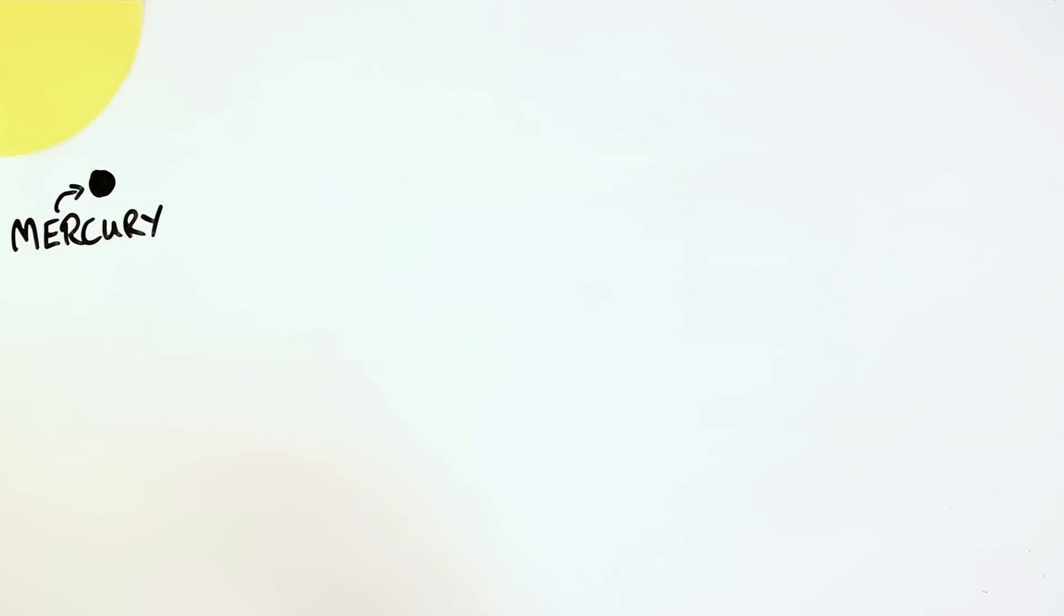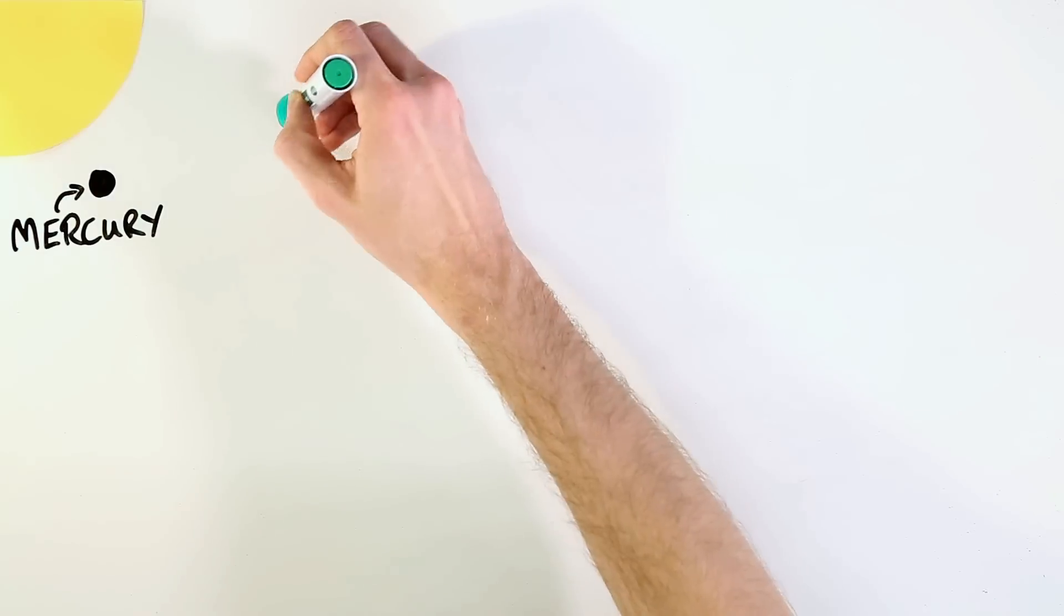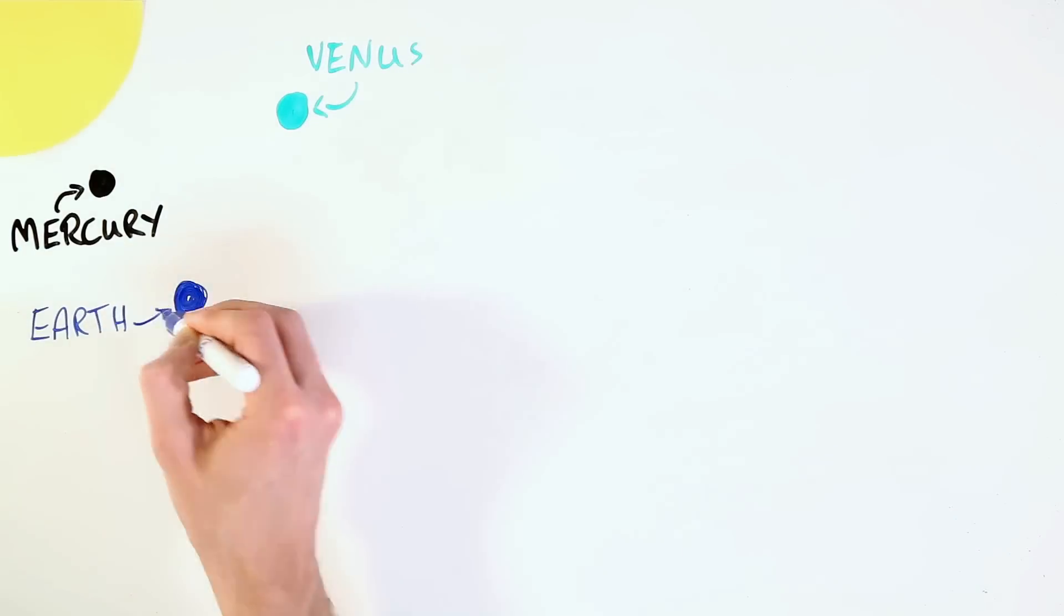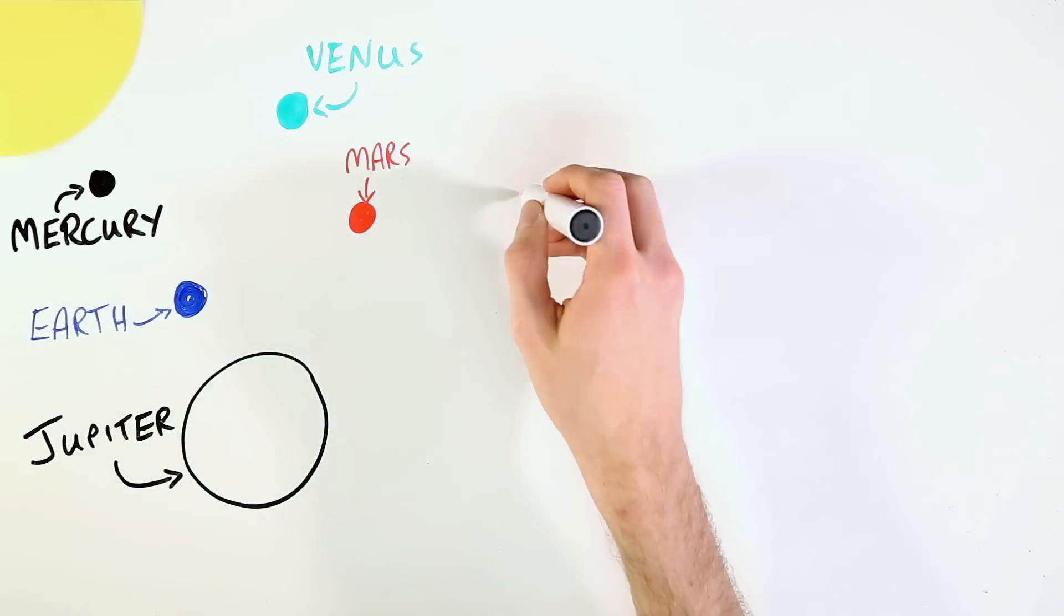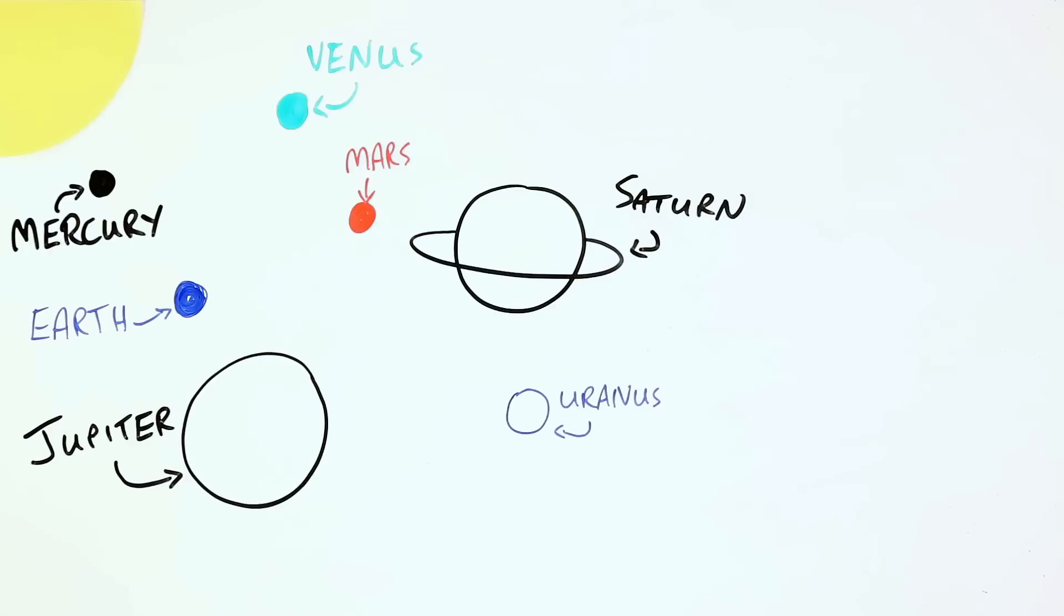This great mass gives the Sun a strong gravitational pull, which holds small rocky planets, including the Earth, in close orbit. Further out are the gas giants, many times bigger than the rocky planets. These are magnificent balls of gas surrounded by rings of dust and space debris.